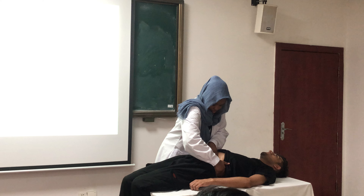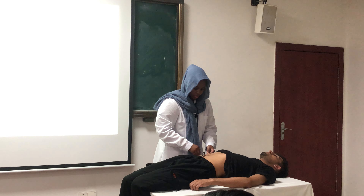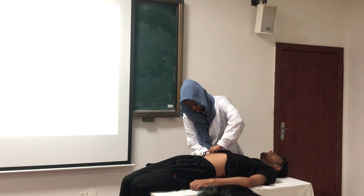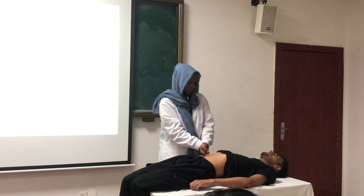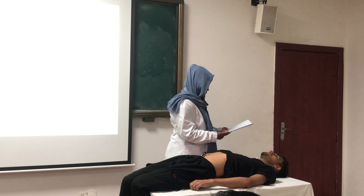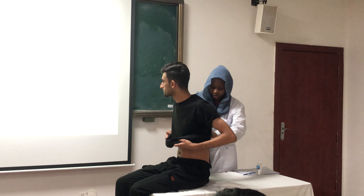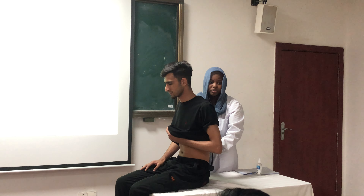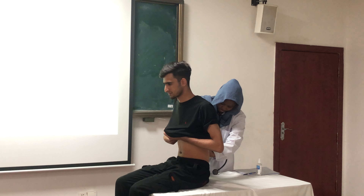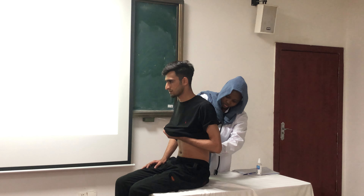Now I'll palpate for the kidneys. This is done by putting one hand on the lower part of the ribs and using the other hand to palpate firmly, bimanually. I'll do that on both sides, checking for any signs of kidney enlargement. I'll also palpate the renal angles — between the lower ribs and the lumbar vertebra — asking the patient to report any tenderness.